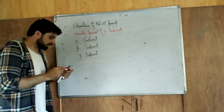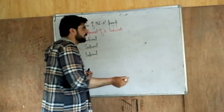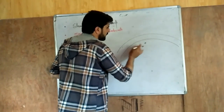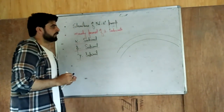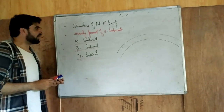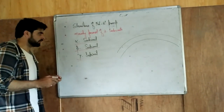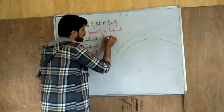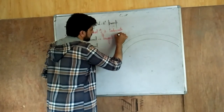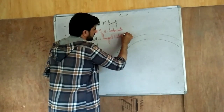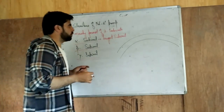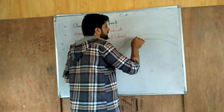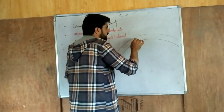Taking the alpha subunit in detail: the alpha subunit is the largest subunit. It is a transmembrane protein — specifically a 10-pass transmembrane protein, meaning it crosses the plasma membrane 10 times. That is why we call it a 10-pass transmembrane protein.